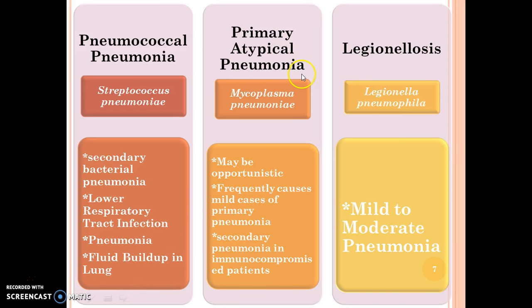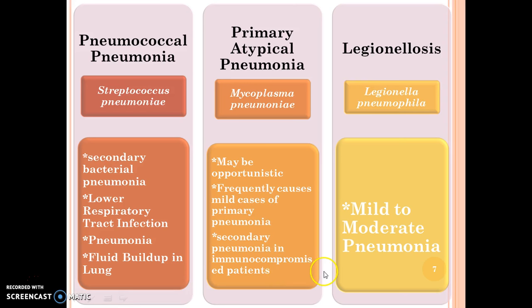Primary atypical pneumonia caused by Mycoplasma pneumoniae may be opportunistic, frequently causes mild cases of primary pneumonia, and secondary pneumonia in immunocompromised patients. Legionellosis is caused by Legionella pneumophila; the symptom is mild to moderate pneumonia.